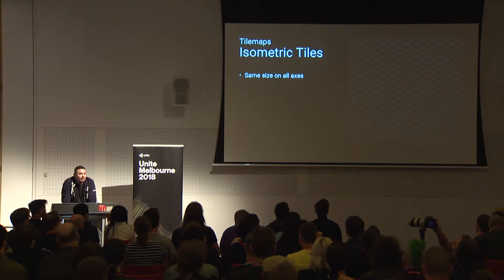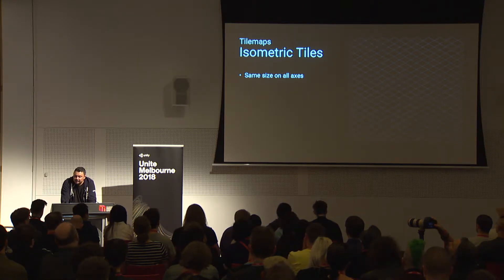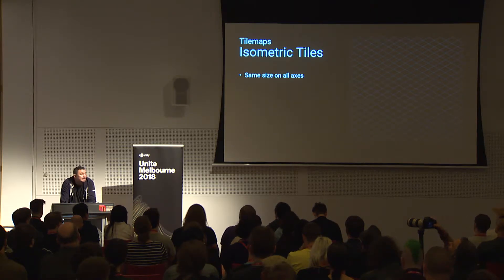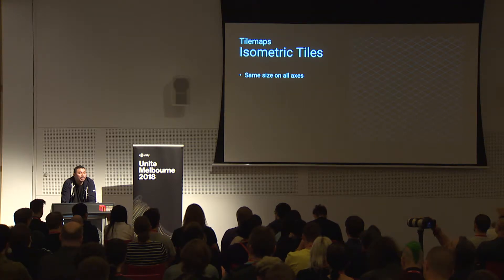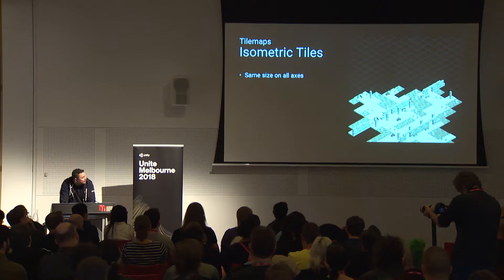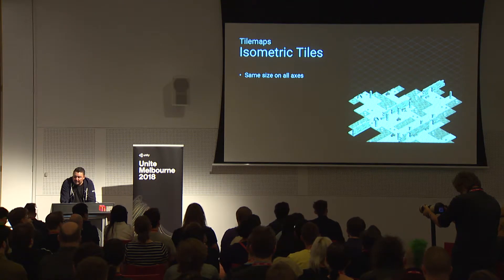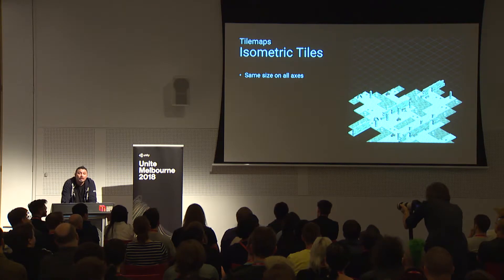Next up for tile maps: isometric. This is probably the most popular grid system, used in all sorts of RPGs, strategy games, city builders. These are characterized by being the same size on all axes, but you can scale them in Unity — so if you're using diametric projections, you can create more interesting isometric tiles. Here's the dungeon isometric tile set from Kenny. You can add colliders, change grid settings, and write all the same scriptable brushes and scriptable tiles you'd use with rectangular tiles — except now they work for hexagon and iso.